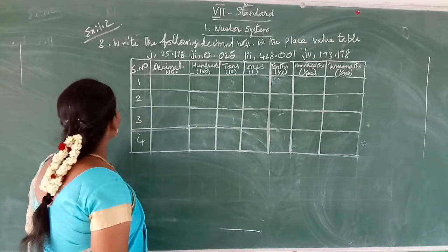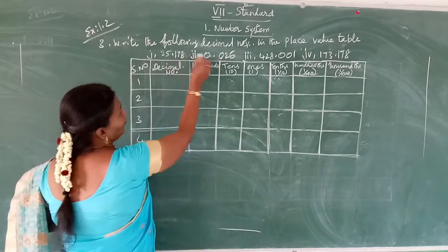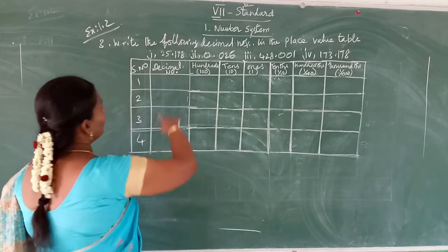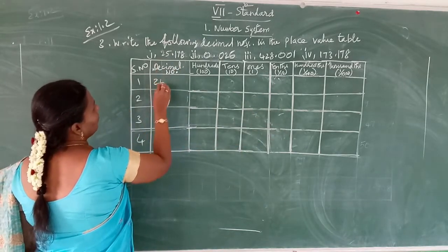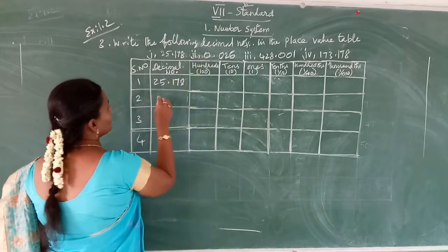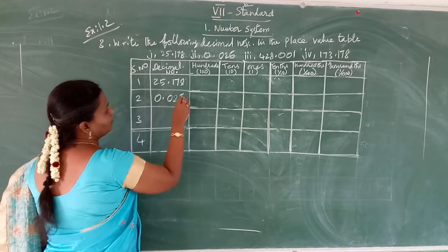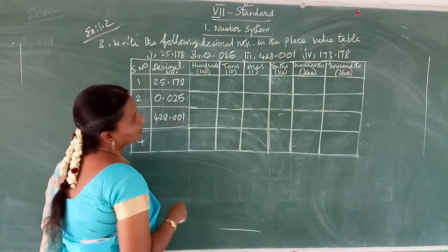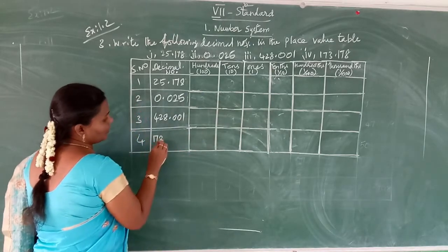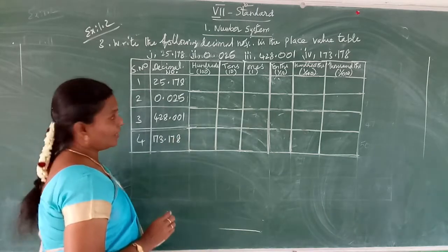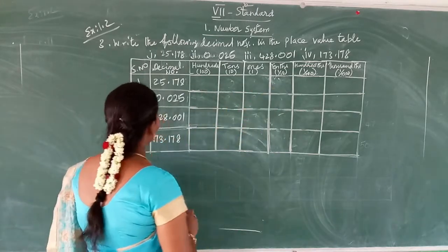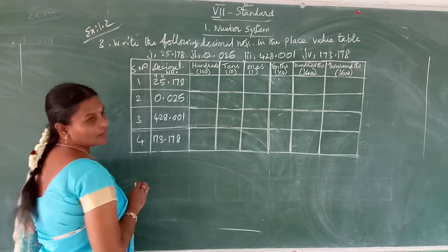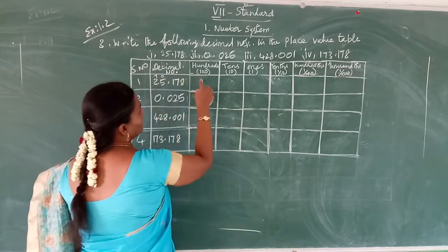Listen children. Exercise 1.2, third sum: write the five decimal numbers in the place value table. The decimal numbers given are: 125.178, 0.025, 428.0001, and 173.178. See the first one — the whole part is 25, so tens is two and ones is five. No hundreds, so the hundreds space is zero.